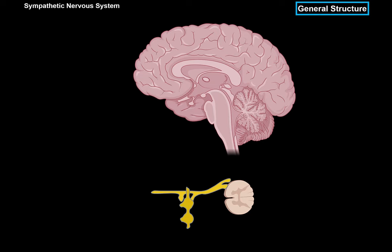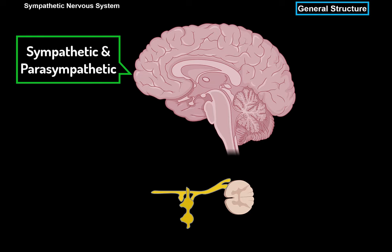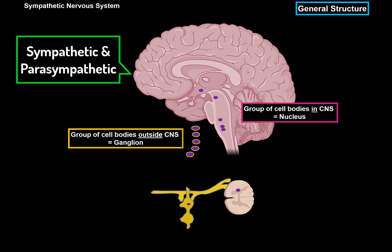The autonomic nervous system — both sympathetic and parasympathetic — is made up of a relay that includes two neurons. When there's a group of nerve cell bodies next to each other within the central nervous system, the whole thing is called a nucleus. While a group of nerve cell bodies located outside of the central nervous system is called a ganglion. That is the first thing I want you to understand.